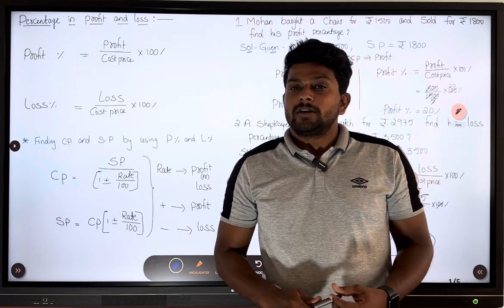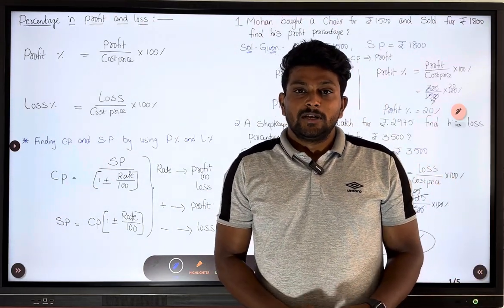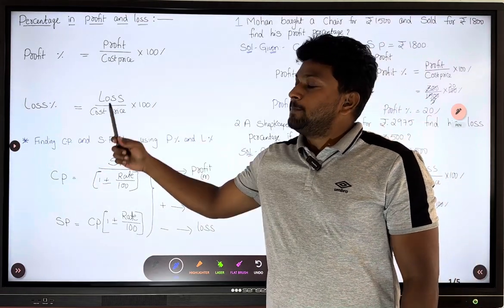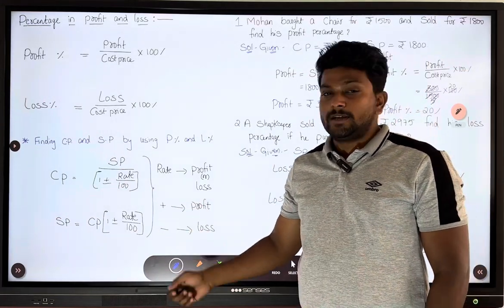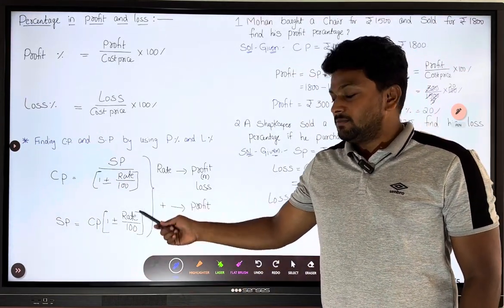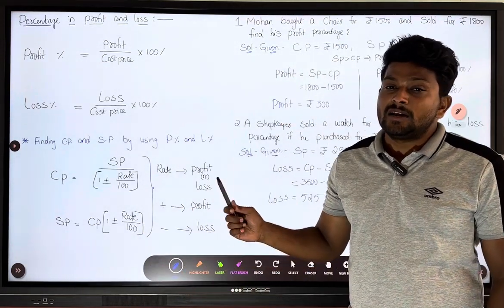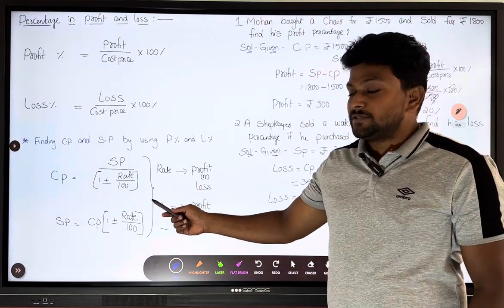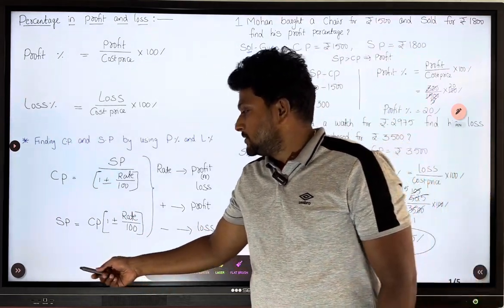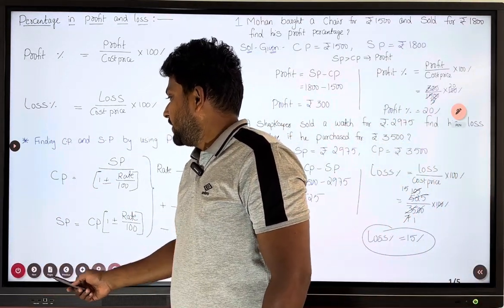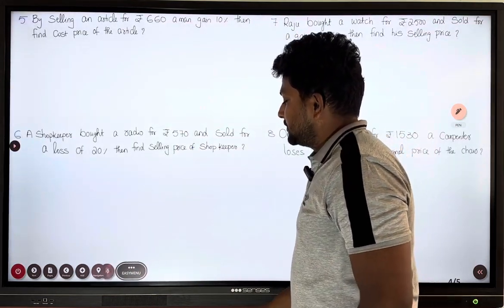Hi students, in the last class we were discussing percentages in profit and loss. We saw how to find profit percentage and loss percentage, and how to find cost price and selling price. We have to learn these two formulas — how to find cost price and selling price if you have profit percentage and loss percentage. The formulas require careful calculation, so let's see some questions.